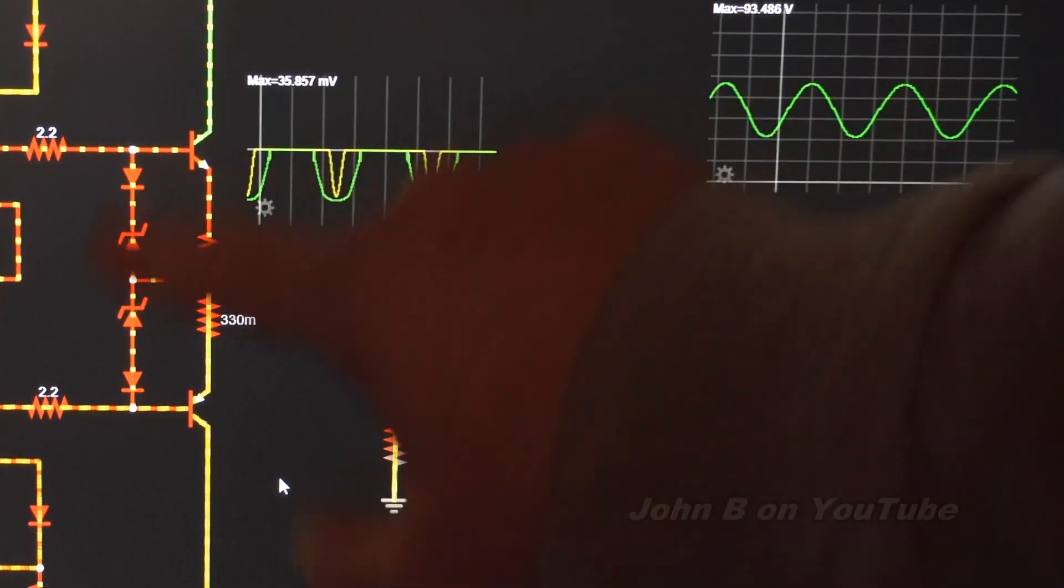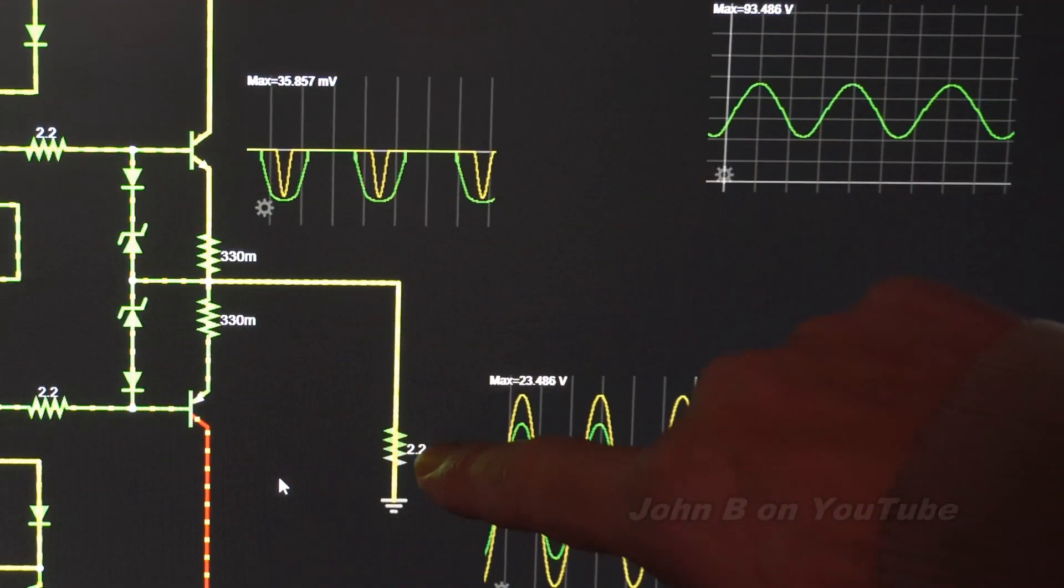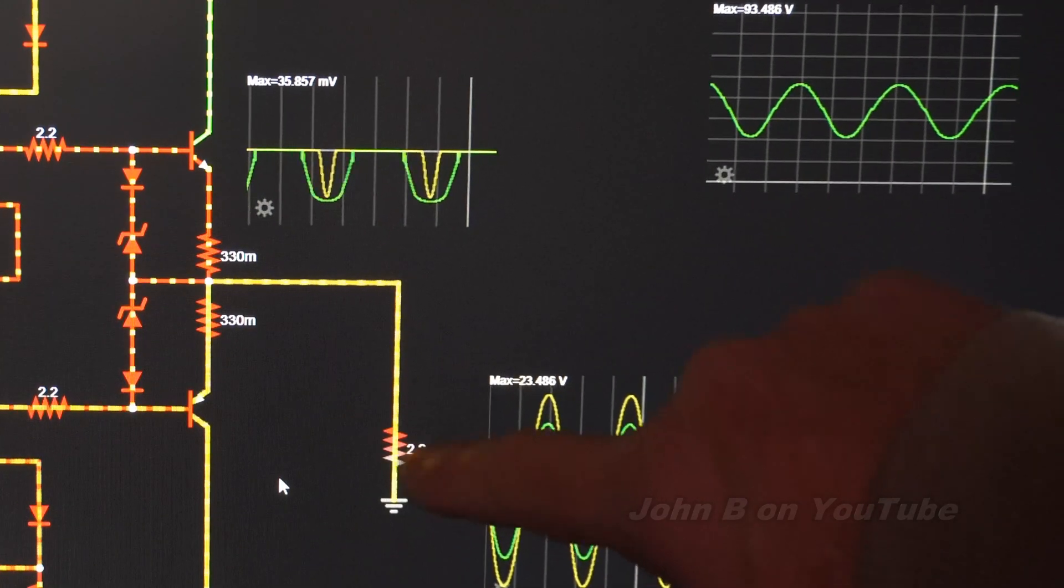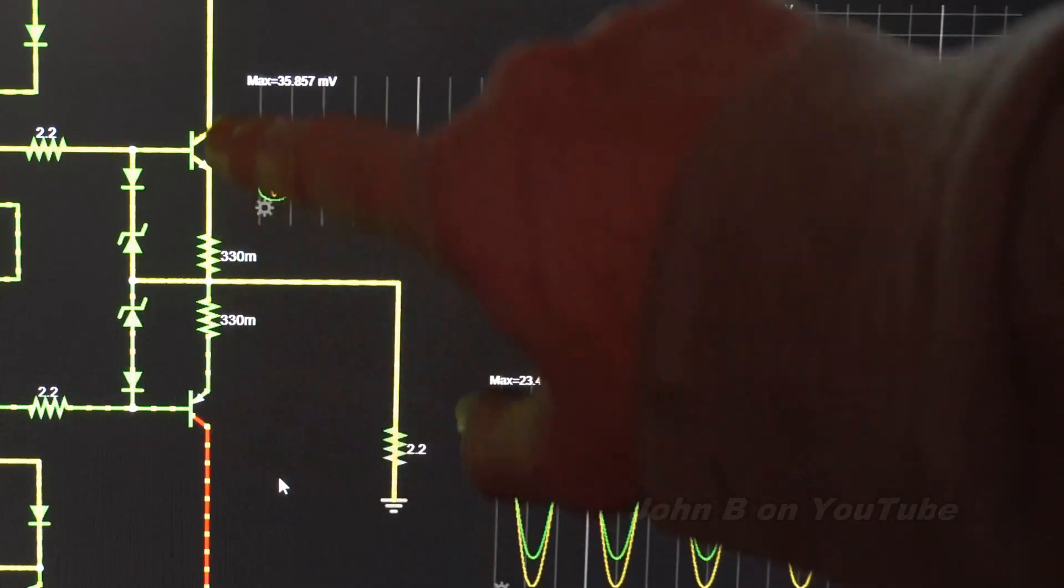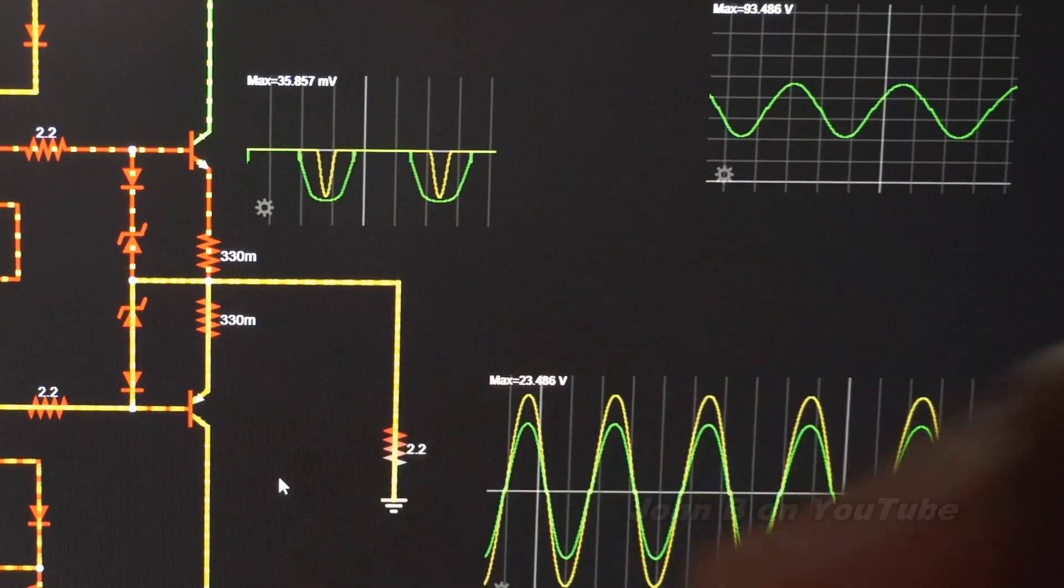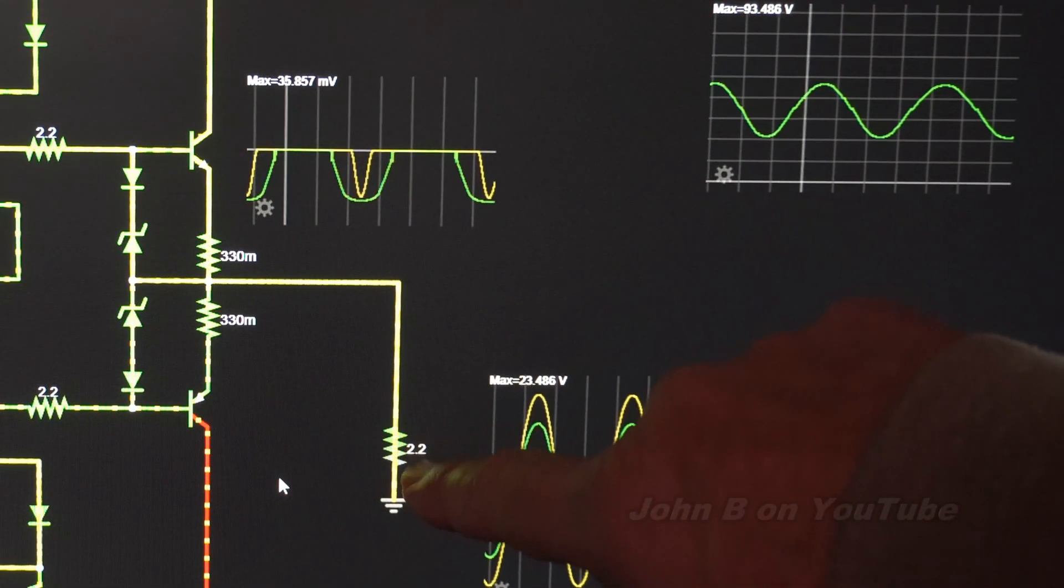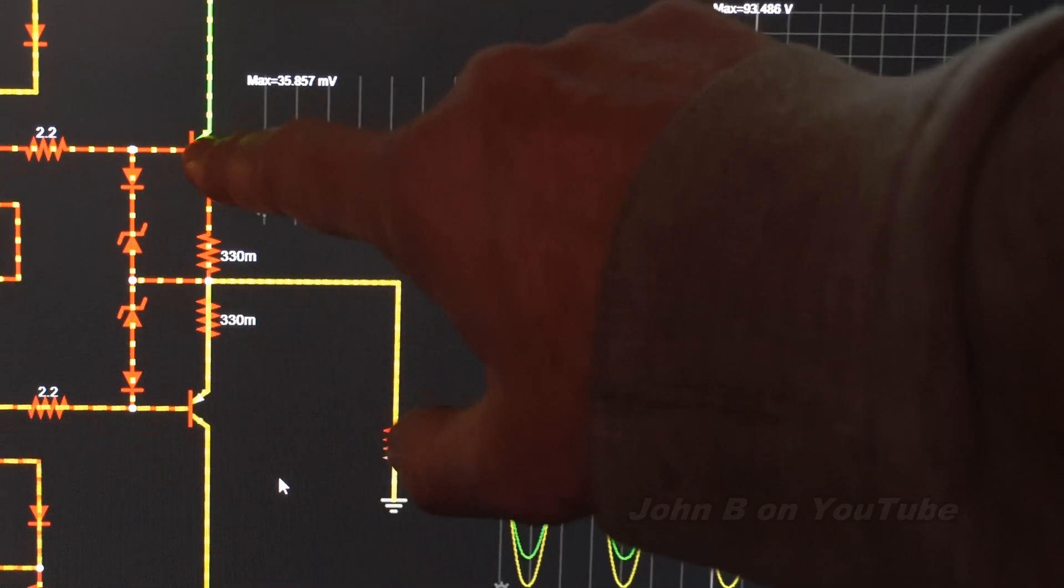What this scope doesn't show you though, with the 2.2 ohm resistor, these transistors would have already blown up. They're rated at 15 amps, and with a 2.2 ohm load, they will have failed.